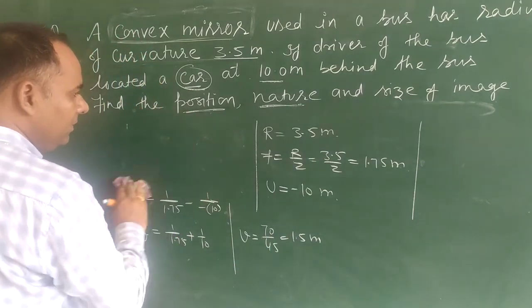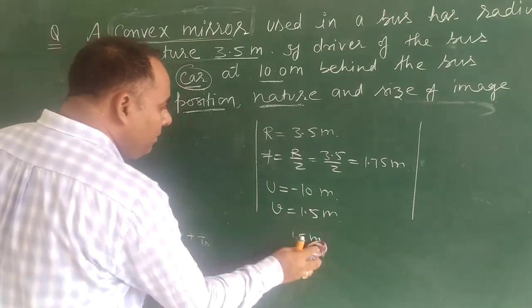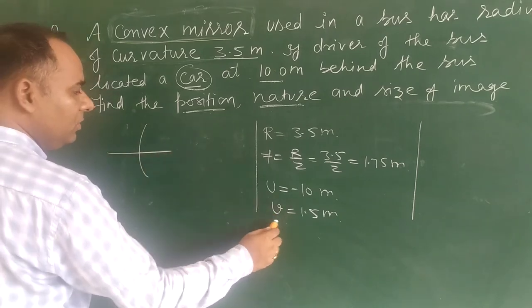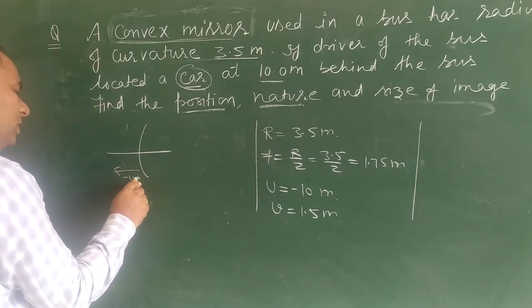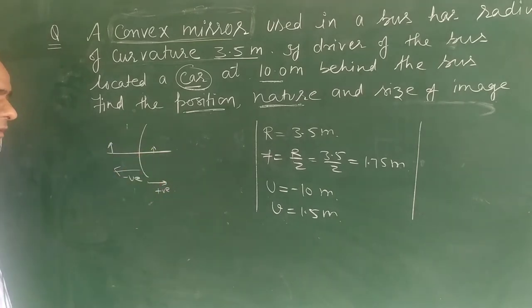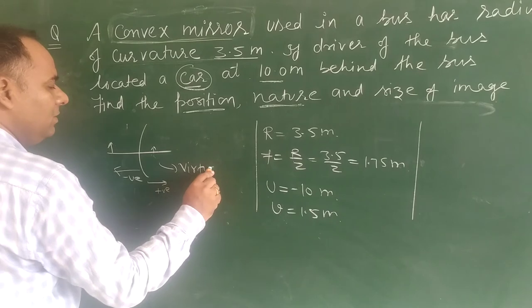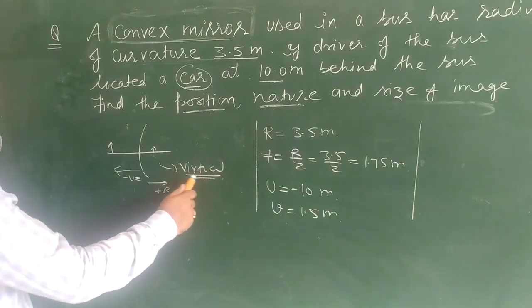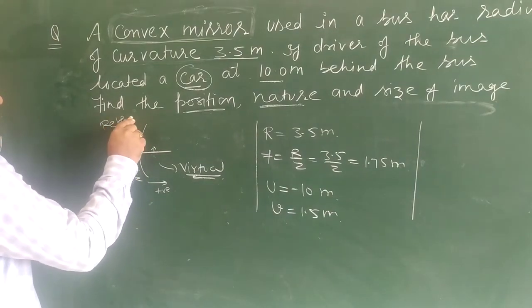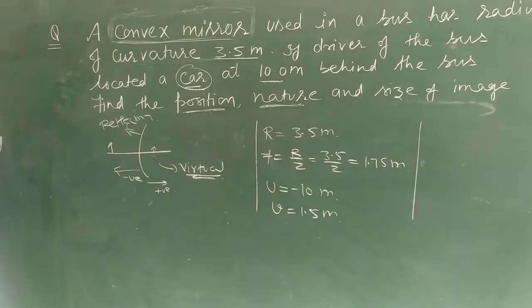So v is determined to be 1.5 meters. Since v is positive, the image is on the positive side of the mirror — that is, behind the reflecting surface. Therefore, the nature of the image is virtual, because the reflected rays do not actually meet at that point.